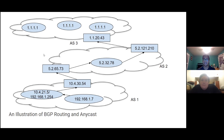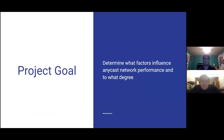The important thing to note is that there's not necessarily just three hops in this scenario — there could be any number of hops, especially depending on whether portions of the Internet infrastructure go down, in which case it would take longer to route around those downed areas. In this way, the Internet is very resistant to tampering, hacking, or even just accidents. Our project goal is to determine what factors influence Anycast network performance and to what degree, measured by ping time — how long it takes for a signal to go back and forth between a computer and an Anycast server.